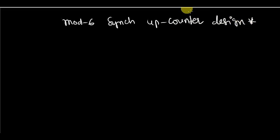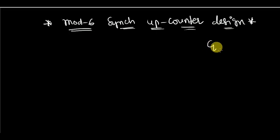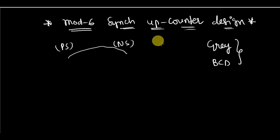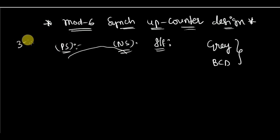With this we can conclude the counter design, especially synchronous counter design. It can be any counter — a Gray counter, a BCD counter, or any other. The important thing is how you write the present state and next state table, and the type of flip-flops you are using. Converting the present state and next state relations into inputs of flip-flops is the only thing that matters in counter design. So far we have done two examples; with this it will be three, which are more than enough to excel in synchronous counter design.